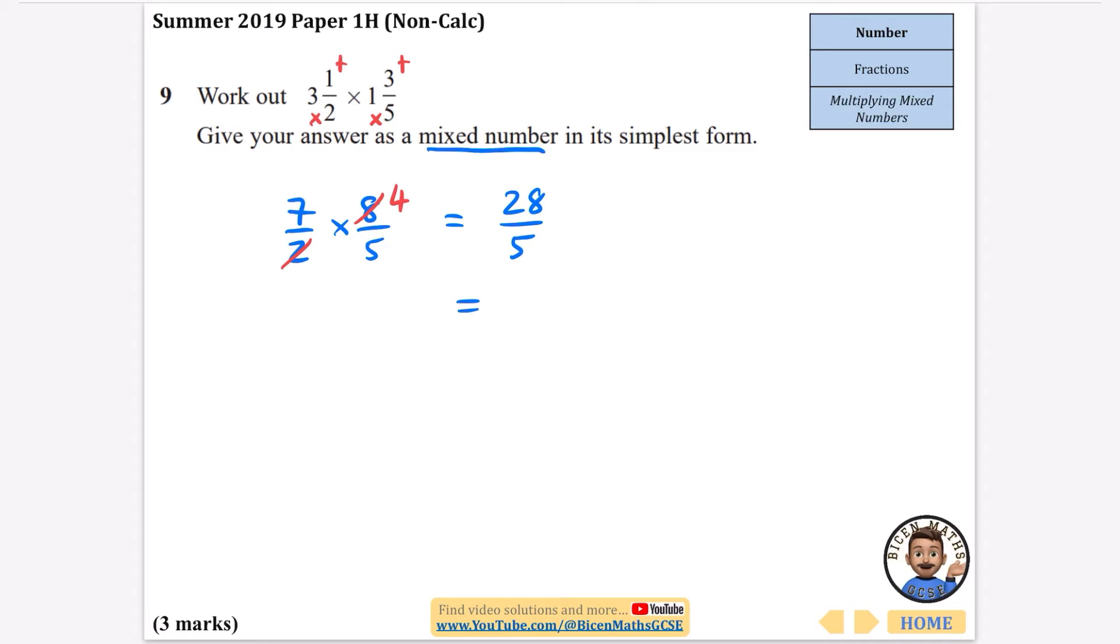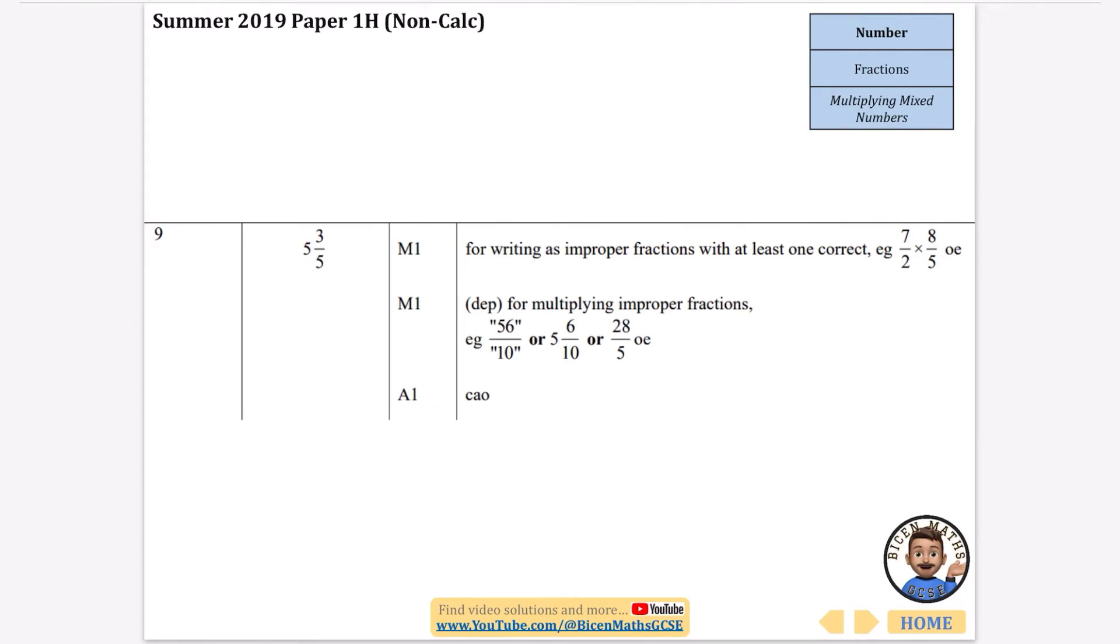So 7 times 4 is 28, and that's being divided by 5. It wants it as a mixed number. So 5 goes into 28 five times: 5, 10, 15, 20, 25. And there are 3 left over. So it is 5 and 3/5. Let's check we've got it right. Yep, we did.